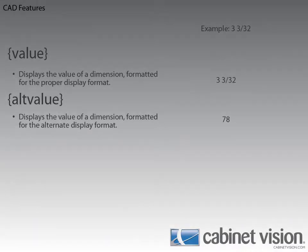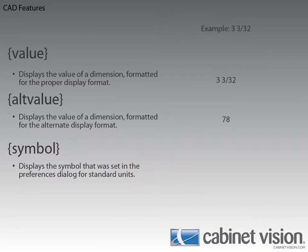Moving on, we come to the symbol variable. This variable will display the symbol that was set in the Preferences dialog for the standard unit. For our example, this means the symbol will display double quotes. It's going to do this because we're working in Imperial units and I didn't change the symbol from the default value. You can specify your own symbol for Imperial and metric units, and we will be getting to that later.